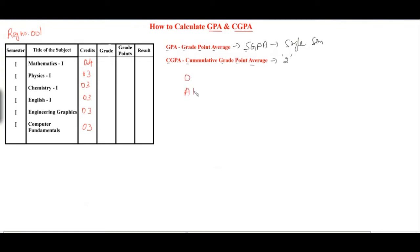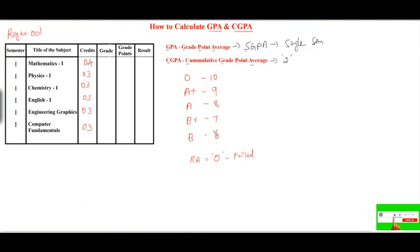After completing their end semester examinations, the student has got grades. In Anna University, we follow these grades: O, A+, A, B+, and B. The numerical value for O is 10, A+ is 9, A is 8, B+ is 7, and B is 6. There is one more grade called RA — reappear — where the student gets 0 grade points, meaning the student has a backlog or has failed. We call it arrear or reappear.